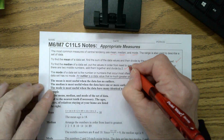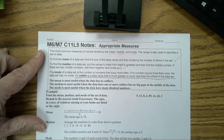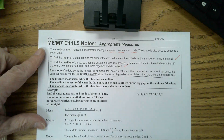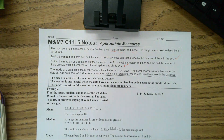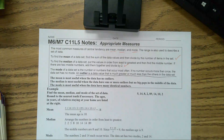The mode of a data set is the number or numbers that occur most often. If no number occurs more than once, the data set has no mode. Now, something we did not talk about yesterday: outliers. An outlier is a data value that is much greater or much less than the others in the data set. Outliers skew your data — that means it can mess it up — and we're going to talk about that in just a little bit.